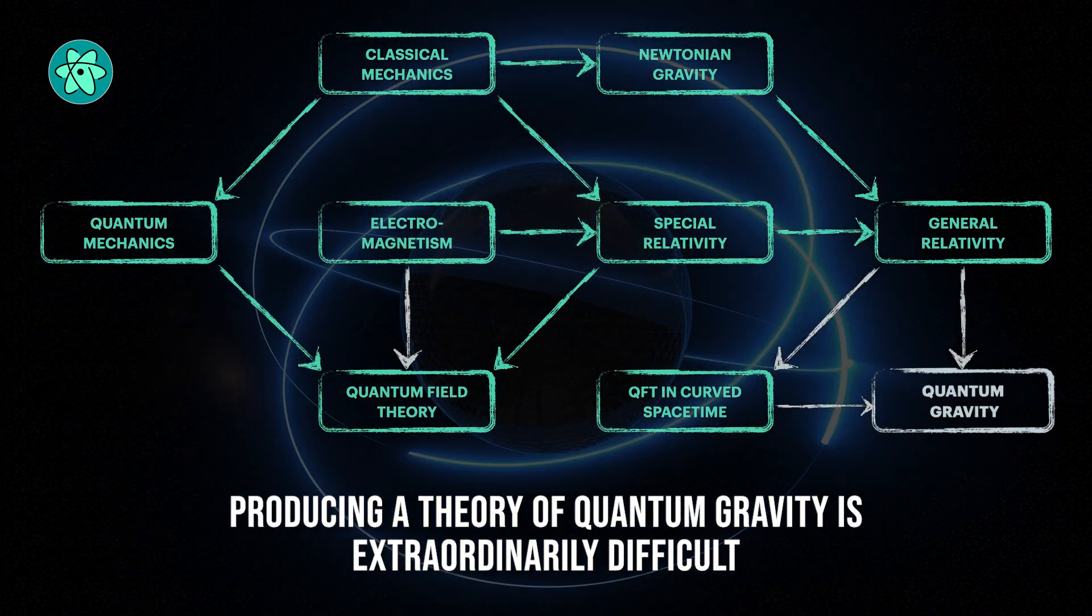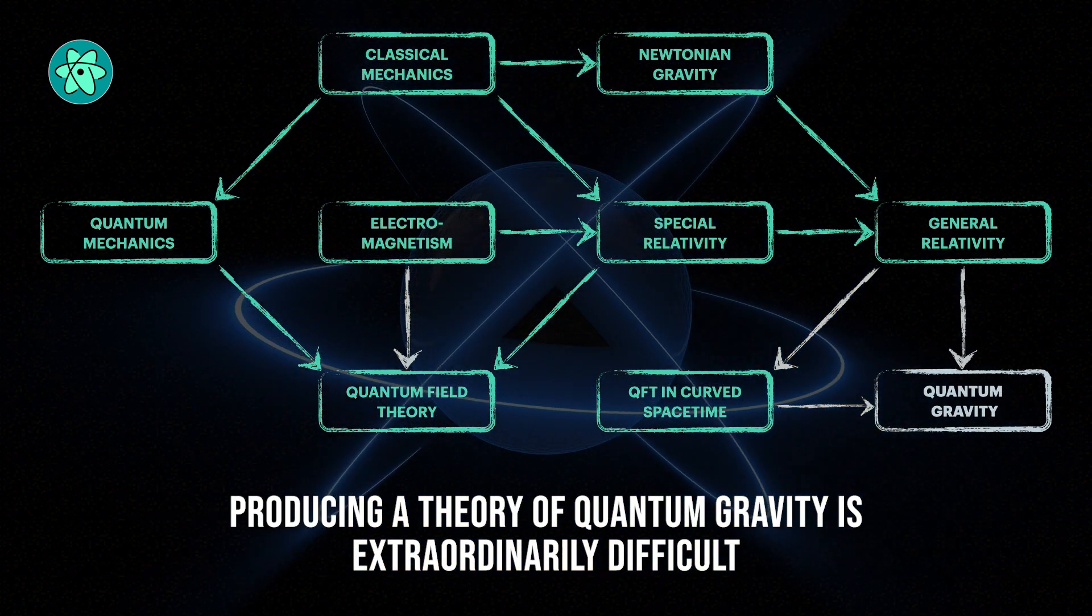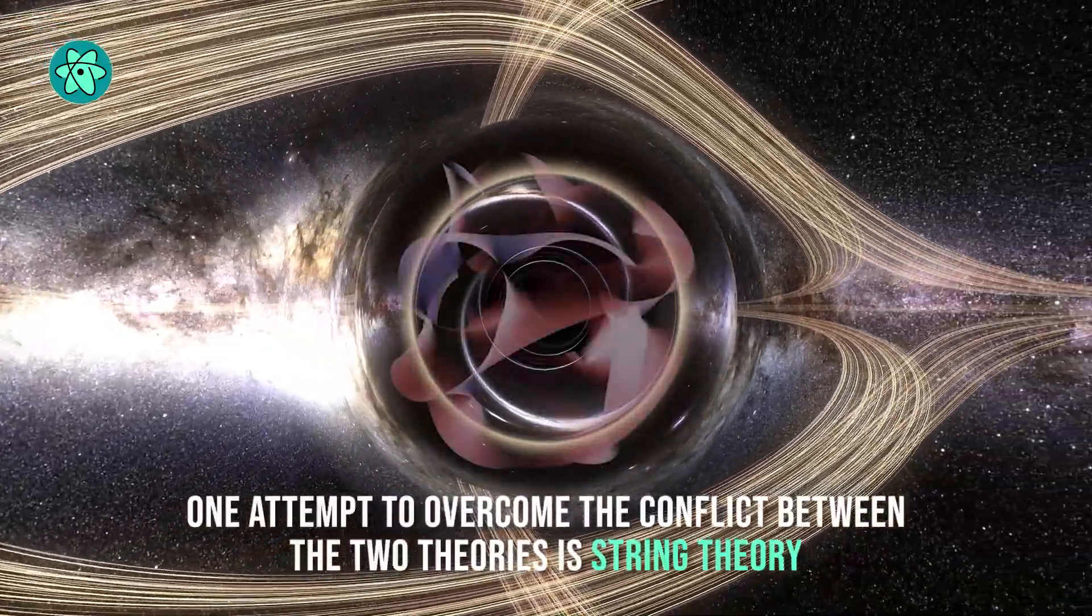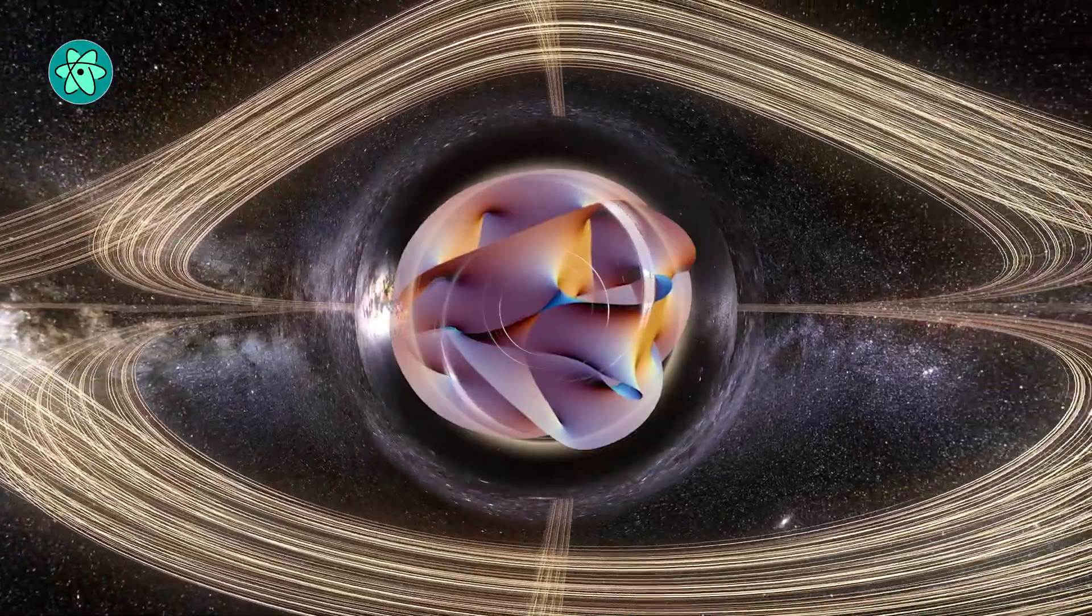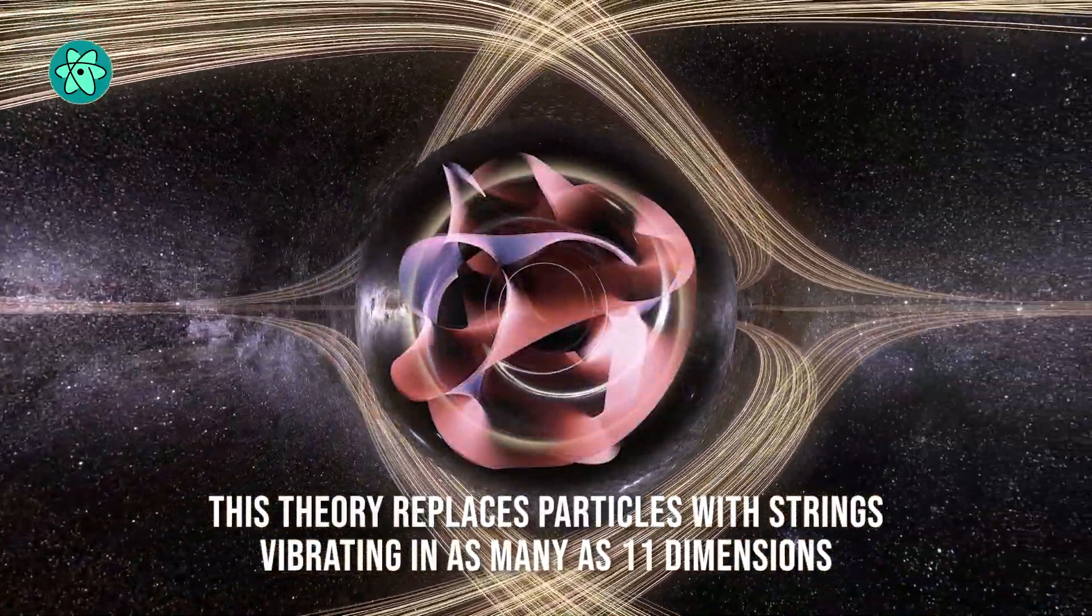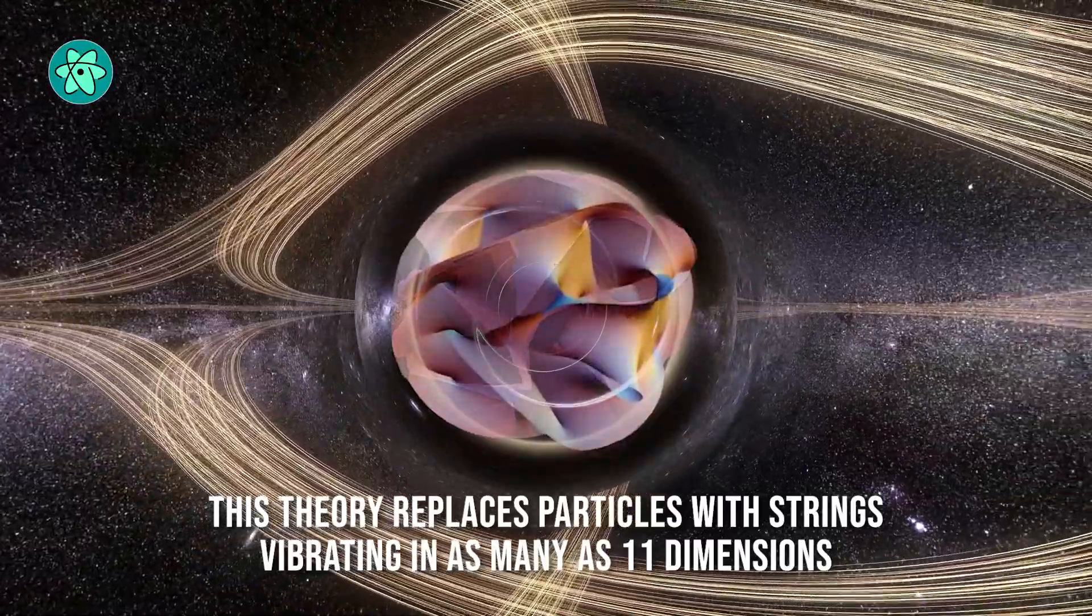It turns out that producing a theory of quantum gravity is extraordinarily difficult. One attempt to overcome the conflict between the two theories is string theory, which replaces particles with strings vibrating in as many as 11 dimensions.